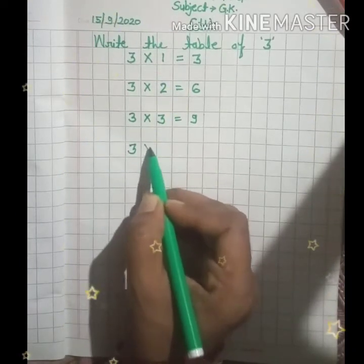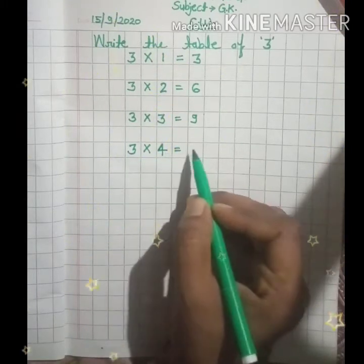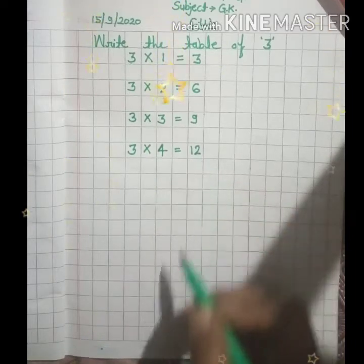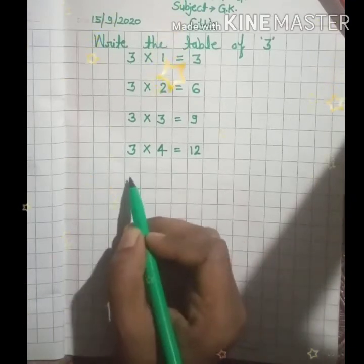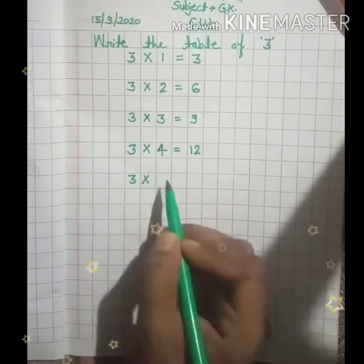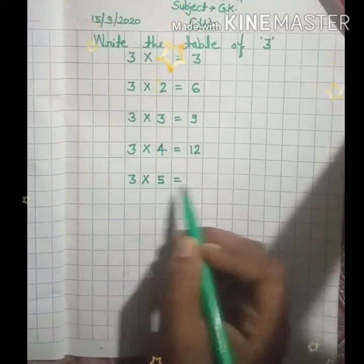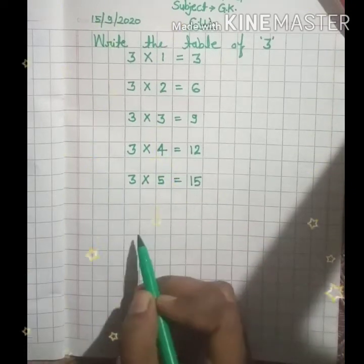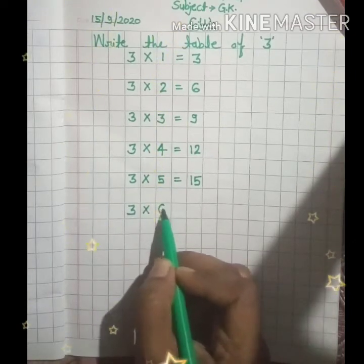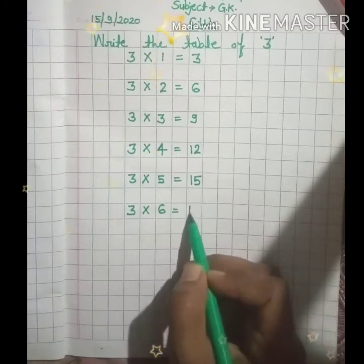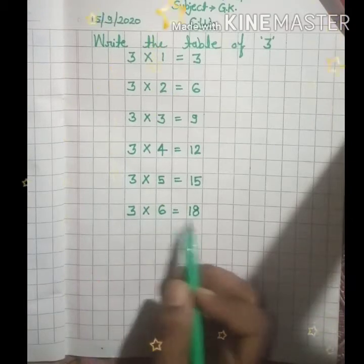3 into 4 equal 12. 3 into 5 equal 15. 3 into 6 equal 18.